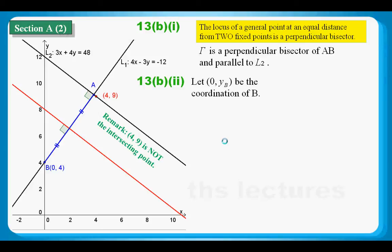One way is to find a point on gamma, and it should be the midpoint between A and B, because gamma is an angle bisector. Finding B is not difficult, because we have already got L1, so B is (0,4).